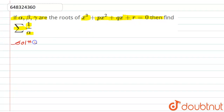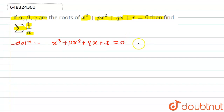For this, let's see the solution. We have given the equation x³ + px² + qx + r = 0, having the roots alpha, beta, gamma. We have to find the value of summation of 1 upon alpha.